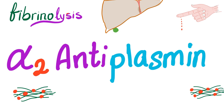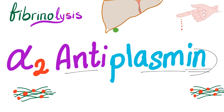Another beautiful day, another beautiful video about bleeding and coagulation disorders. In the previous video, we talked about plasminogen activator inhibitor. Today, we continue discussing fibrinolysis by talking about alpha-2 antiplasmin. If it ends in 'in', it's a protein. And if it's an anti-protein, it's probably going to be a protein produced by the liver. With that being said, let's get started.